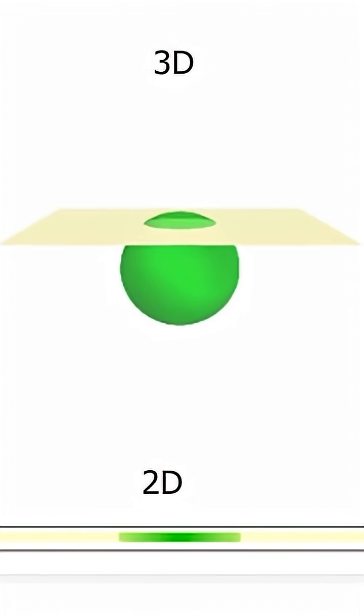If we were able to move a ball through a two-dimensional world, in the two-dimensional world it would appear as though it were a line that suddenly appeared, got longer, and then shrunk again.